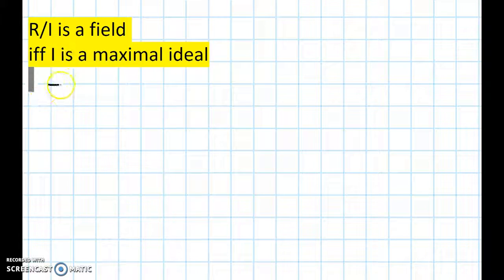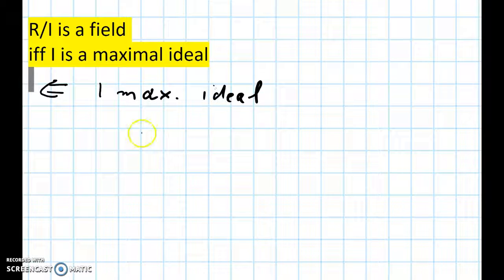Let's look at the other direction. Suppose I is a maximal ideal, and look at this ideal Rx plus I again, where again x is not in I.